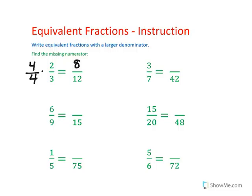And you do the same procedure. 7 goes into 42 six times, so I'm going to multiply 3 over 7 by 6 over 6. 6 times 3 is 18.